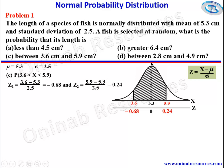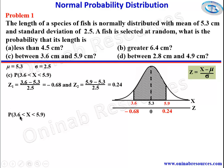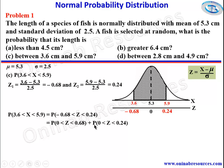We find the area from the center to negative 0.68 and from the center to 0.24, then add them. This gives us P(0 < z < 0.68) plus P(0 < z < 0.24), using positive values by symmetry. So the probability of 3.5 < x < 5.9 equals the probability of negative 0.68 < z < 0.24.